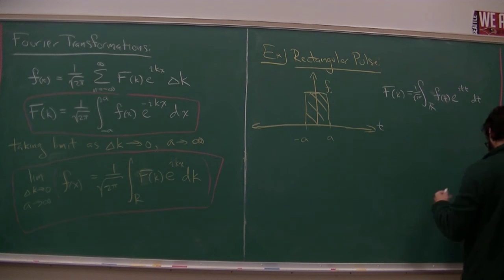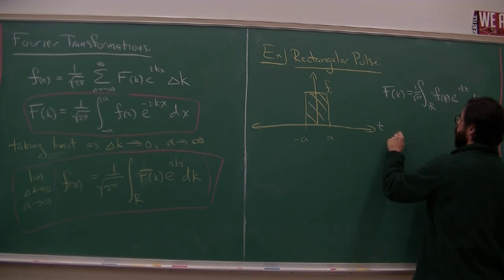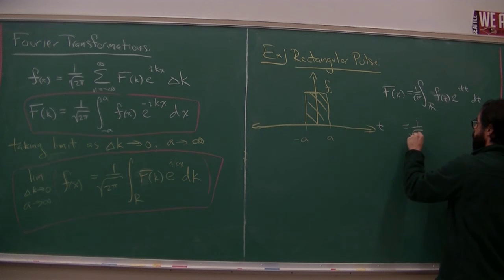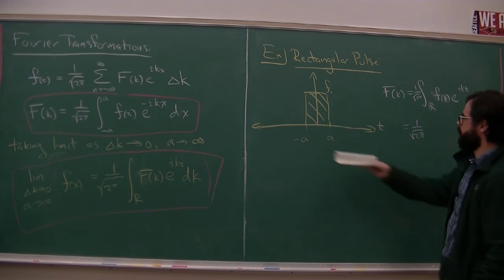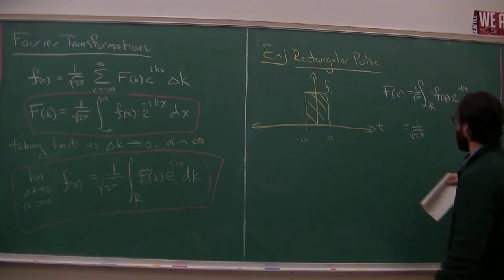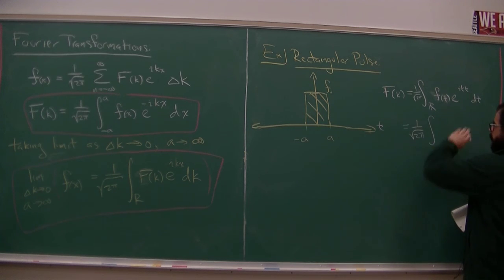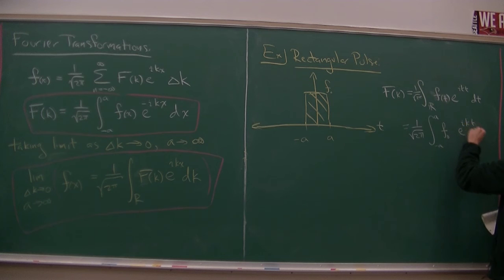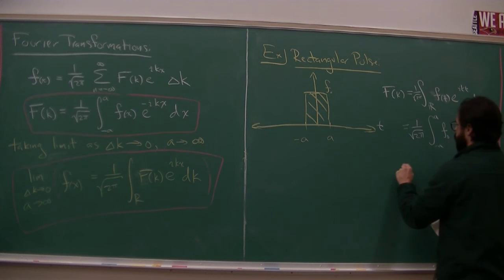And so far that looks good. We have one over root two pi. So this is a great function, because it's almost always zero. And then when it's not zero, it's a constant value. So we get integrand is zero everywhere, aside from in between minus a and a, where the integrand is f0 times e to the i k t dt.